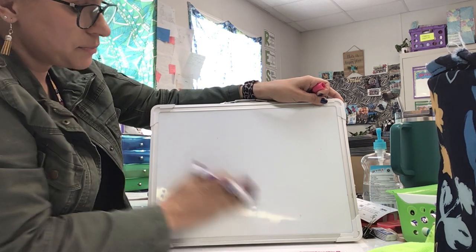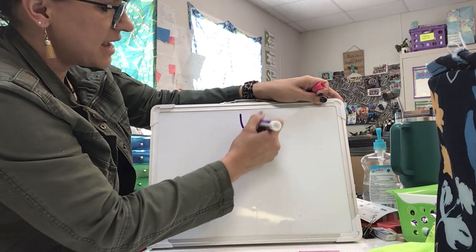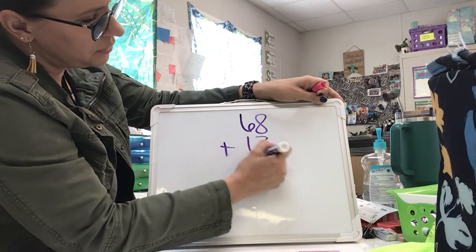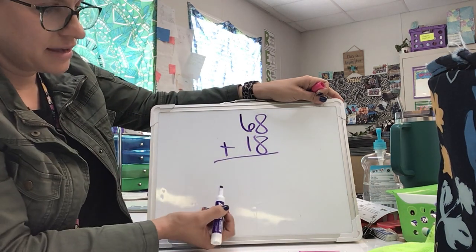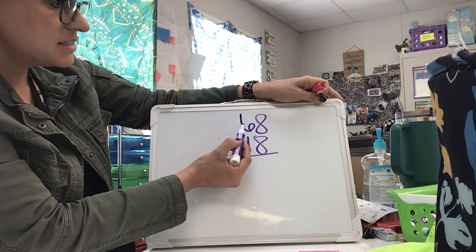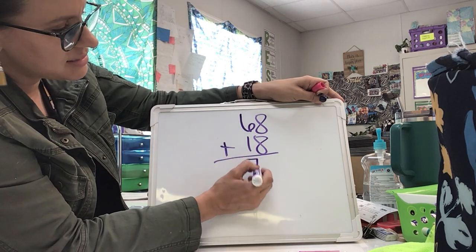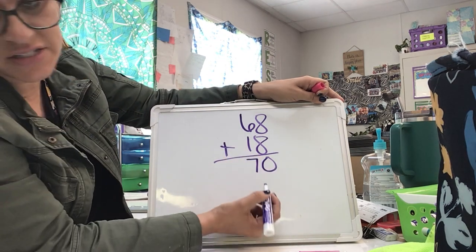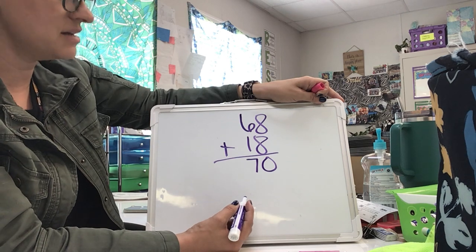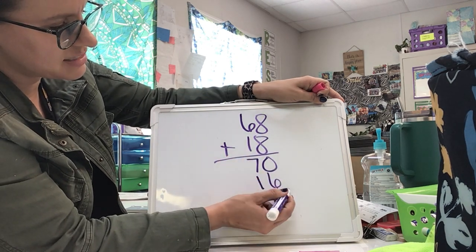That's partial sums. Here's another one: 68 plus 18. Again, for partial sums, you add the tens. Six tens plus one ten is seven tens, but remember it's seven with a zero because they are tens, so seventy. Eight plus eight has a sum of 16.